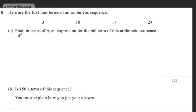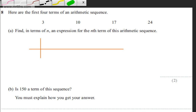In part A for two marks, it says find in terms of n an expression for the nth term of this arithmetic sequence. You certainly don't have to, but I always like to draw a little table and then work out the nth term. Arithmetic simply means it's going up by a fixed amount each time.